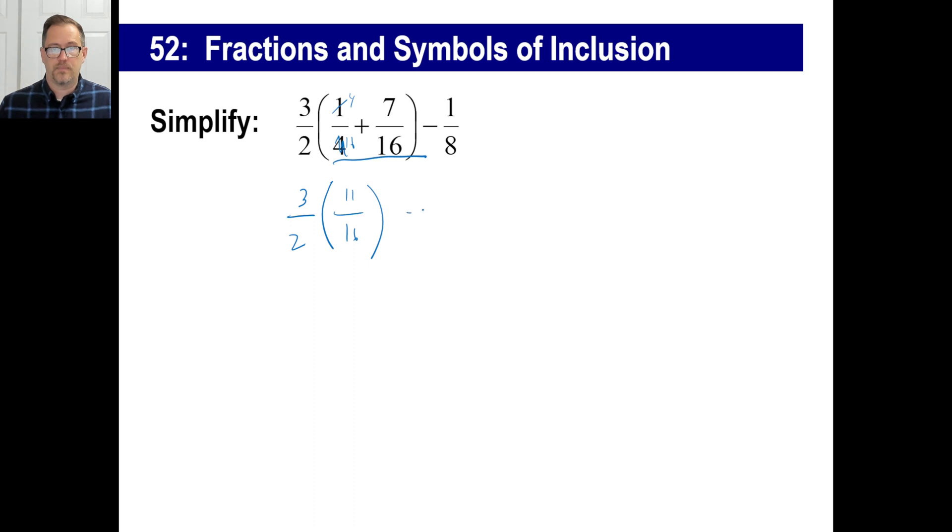There we go. Minus one-eighth. Now what's the next thing we do? Multiply, right? So I don't see anything you can cancel here. So let's just go ahead right across. Three times eleven, and then two times sixteen, minus one-eighth.